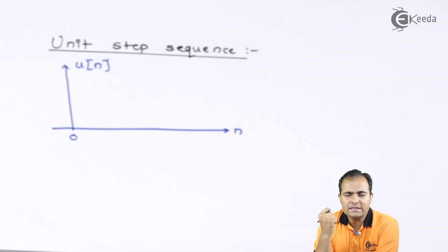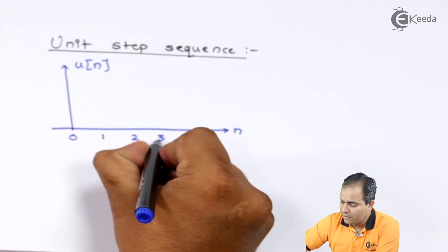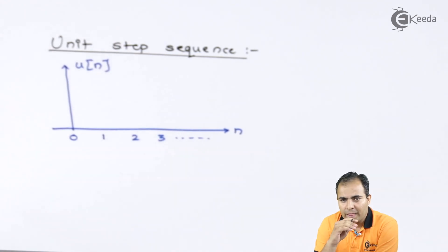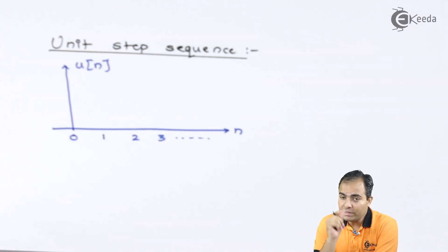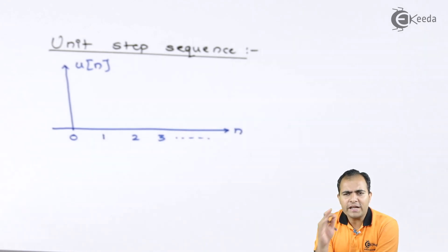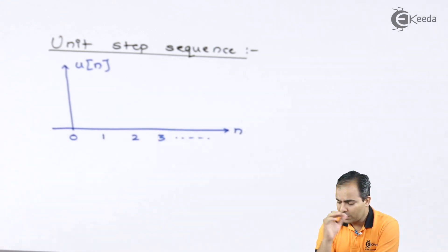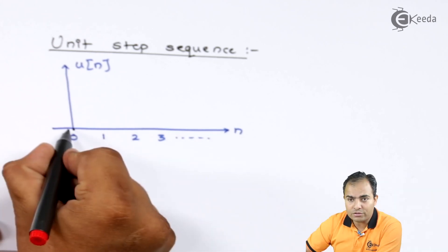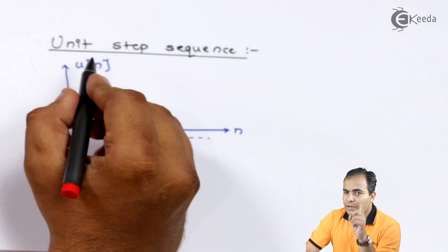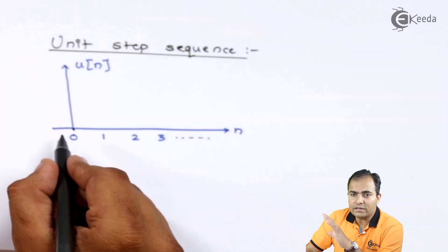Let us take different instances: 0, 1, 2, 3, and so on. Unit step means the amplitude remains the same. Specifically, unit step means the amplitude is always 1 for each and every instance of time — this amplitude will never change. So at n equals 0, the unit step function has amplitude 1, and at any instance this amplitude is always 1.